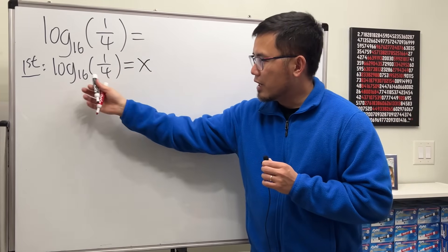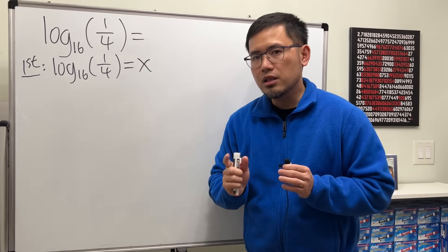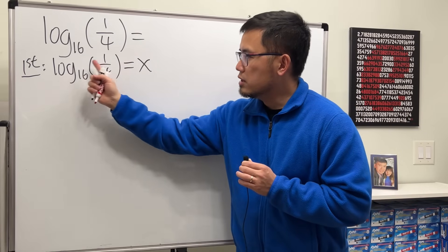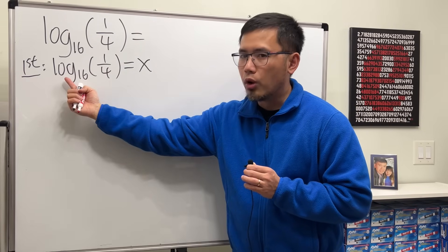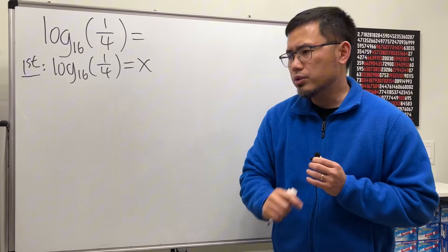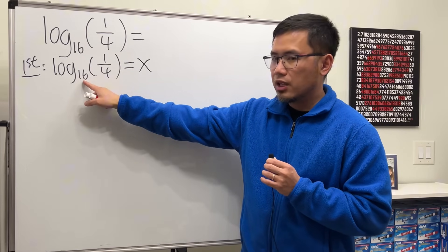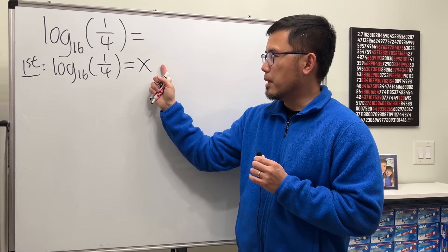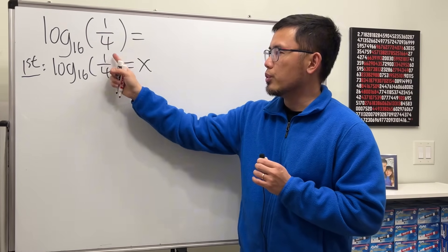x. So now we have an equation and the key to do this is we are going to change this equation from the log form to its exponential form. To do so, you are going to use 16 for the base raised to the x power, and then make that equal to 1 over 4.